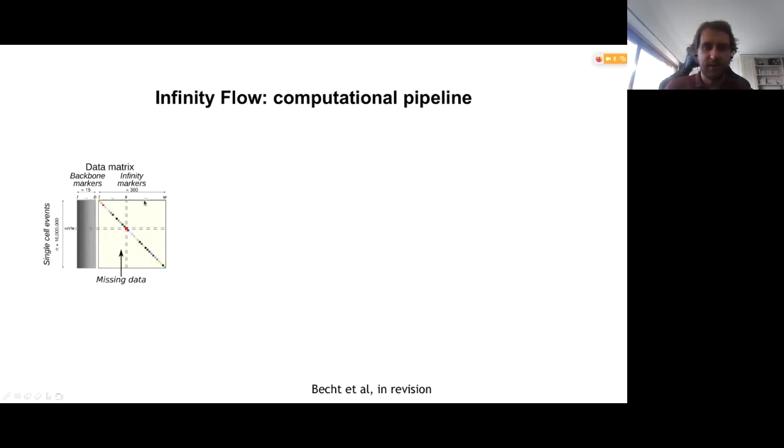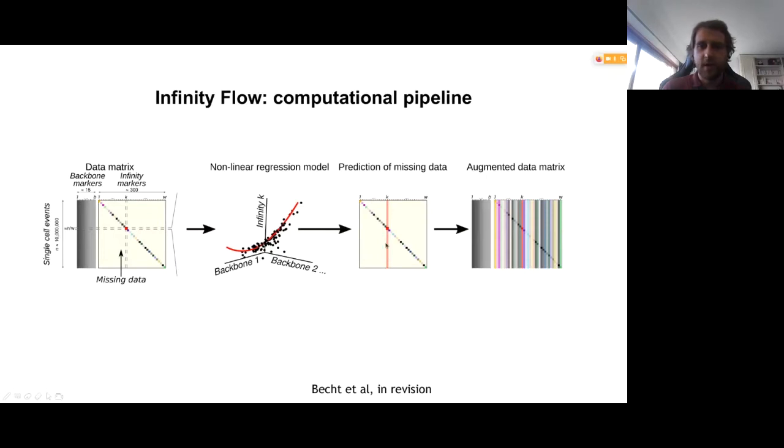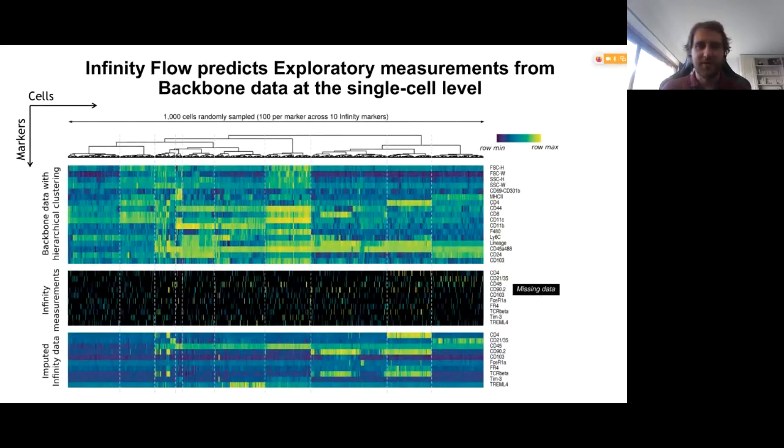However, how we solve this problem is that we use the fact that the backbone is measured everywhere. And what we do is in each well, we train non-linear regression models, trying to predict the expression of these variable antibodies from the vector of backbone antibodies expression. So these models, after they've been trained, they'll let you estimate the expression of these variable antibodies through the whole assay. And you can do that for every well. So basically, instead of all these missing data, you end up with dense matrices of imputed data of every protein across every cell in the assay.